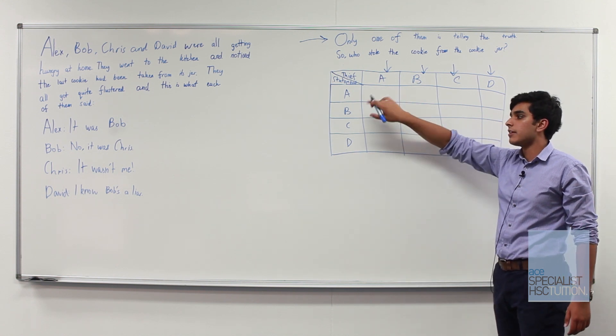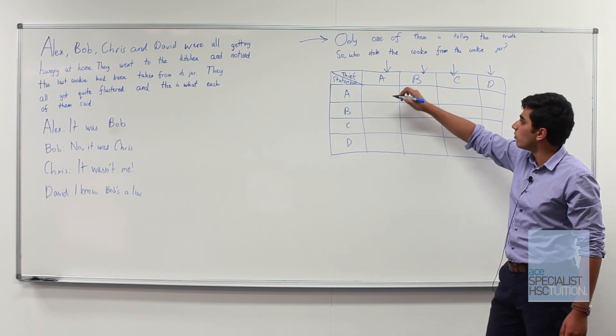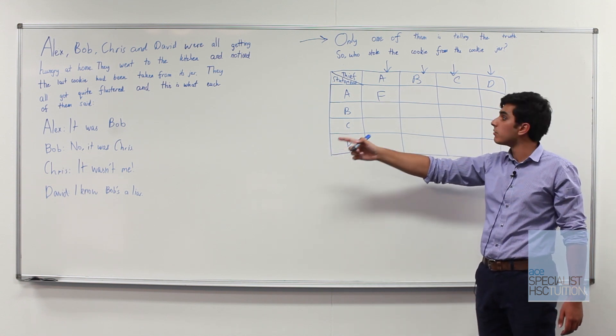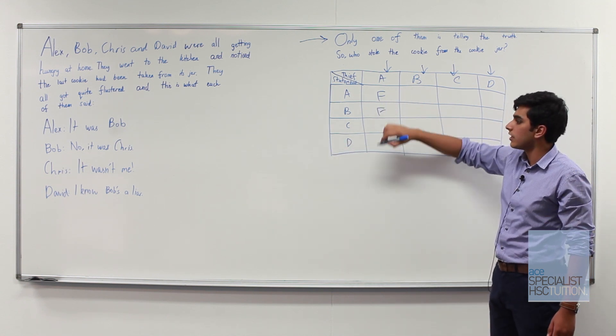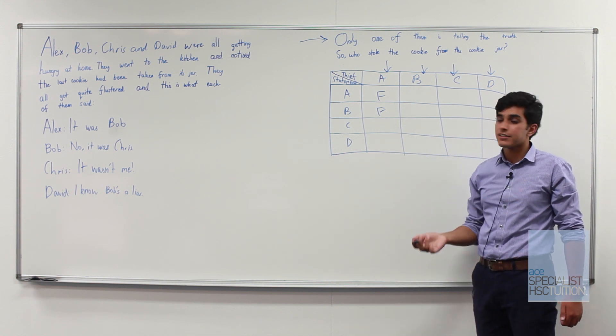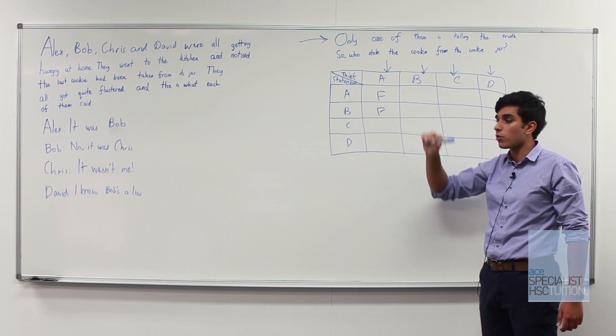So if A has stolen the cookie then his statement that it was Bob would be false. Similarly Bob's statement that no it was Chris would be false and then Chris's statement that it wasn't me would be in fact true because it's A who stole the cookie here.